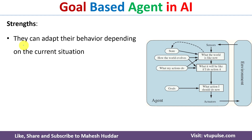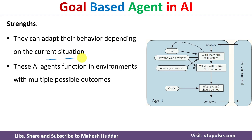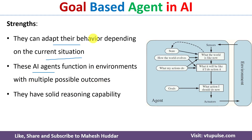The strengths of goal-based agents are: first, they can adapt their behavior depending on the current situation. Second, these agents function in environments where multiple possible outcomes exist. Third, goal-based agents have a solid reasoning capability, and using this reasoning capability they select an action which will lead to the goal state.